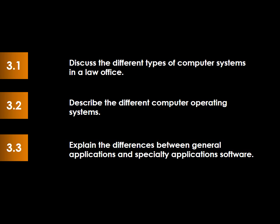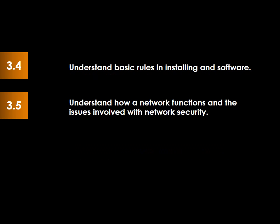These are the purposes we've covered so far. We've discussed the different types of computer systems in a law office, particularly that you can run Windows on an Apple computer to use all Windows software in a legal environment on your Macintosh. We've described the different operating systems — Linux, Windows, and Apple iOS. We've explained the difference between general applications and specialty application software, gone through the basic rules of installing software, and covered how a network functions along with network security issues.